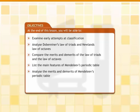At the end of this lesson, you will be able to examine early attempts at classification, analyze Dobereiner's Law of Triads and Newland's Law of Octaves, compare the merits and demerits of the Law of Triads and the Law of Octaves, list the main features of Mendeleev's periodic table, and analyze the merits and demerits of Mendeleev's periodic table.